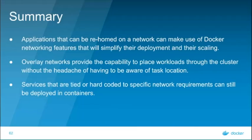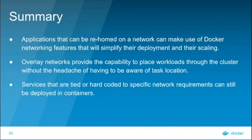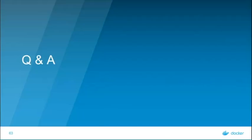That was quite a lot to take on board. Key takeaways: when moving your application into a containerized environment, if you can rehome into new networks, you can make use of a lot of new Docker networking features that will simplify the networking architecture, deployment, and scaling. Overlay networks provide the capabilities to place workloads throughout your entire swarm cluster without having to be aware of task location — DNS lookup, load balancing, virtual IP infrastructure. When you have services tied to specific IP addresses, have hard-coded requirements, or specific networking requirements, through things like the MacVLAN driver they can still be deployed into containers. Thank you very much, and we will quickly go through some of the questions that have been posted.